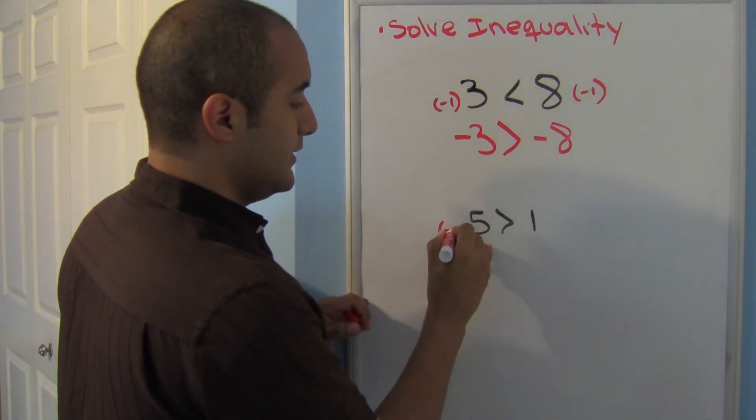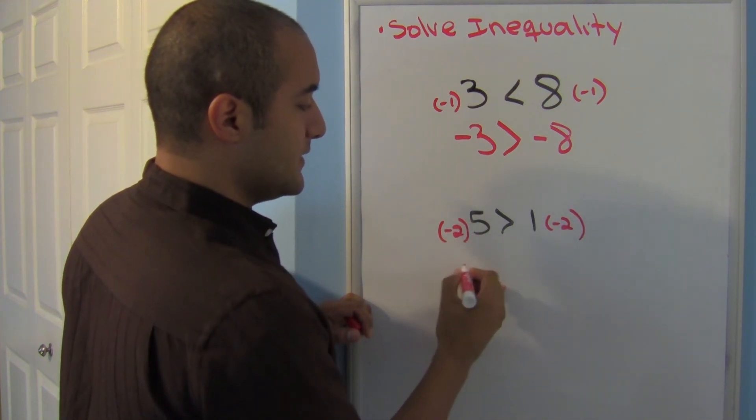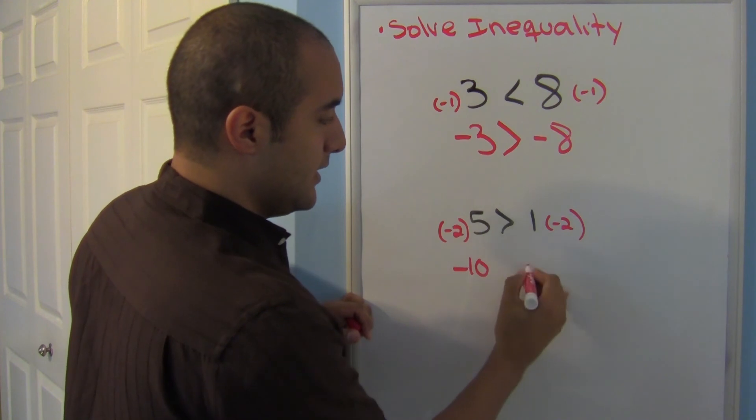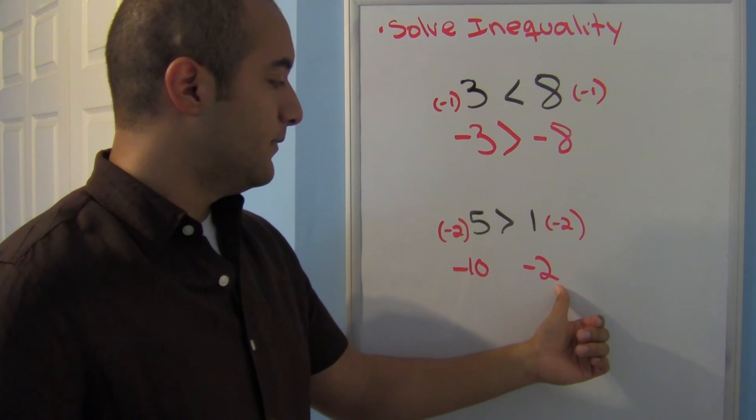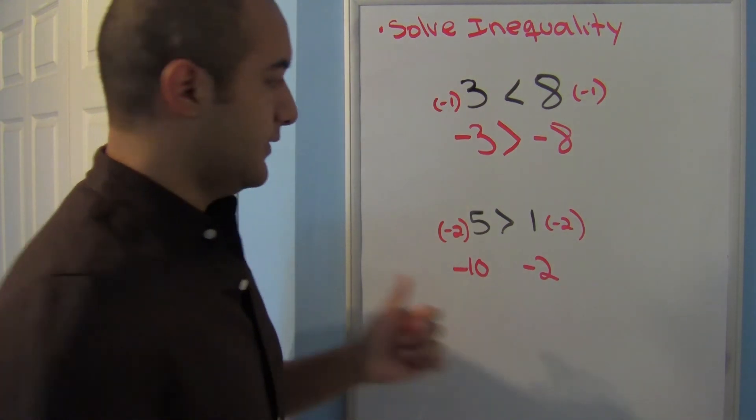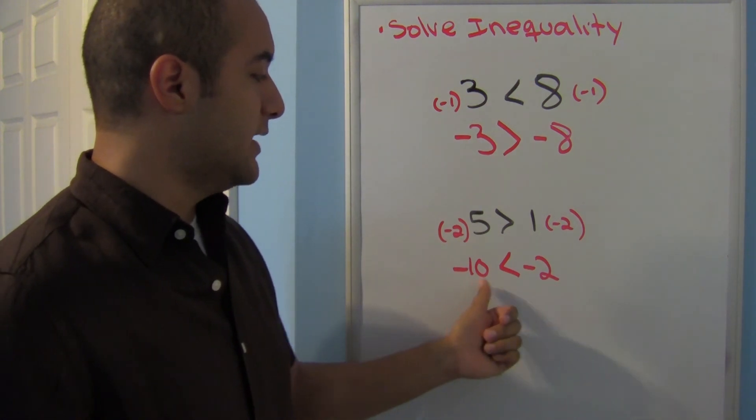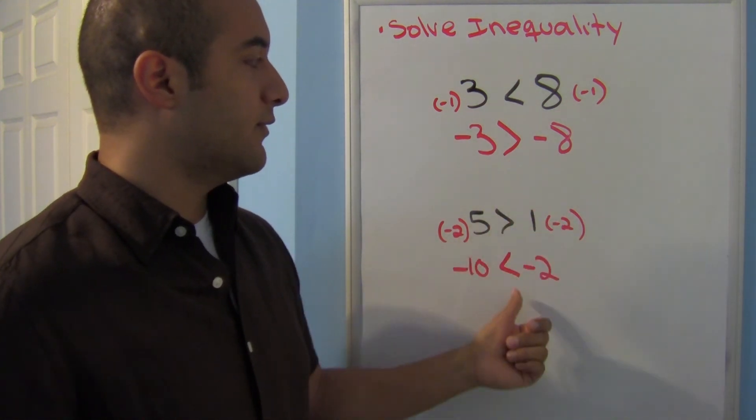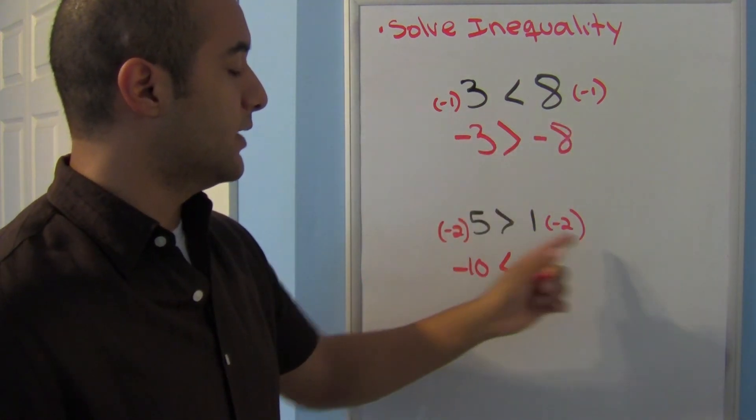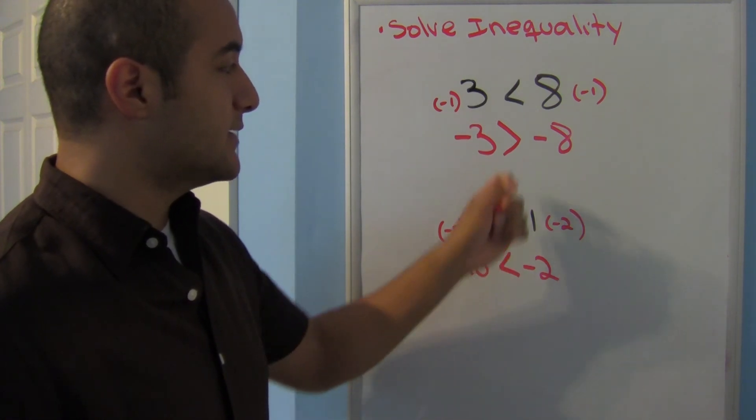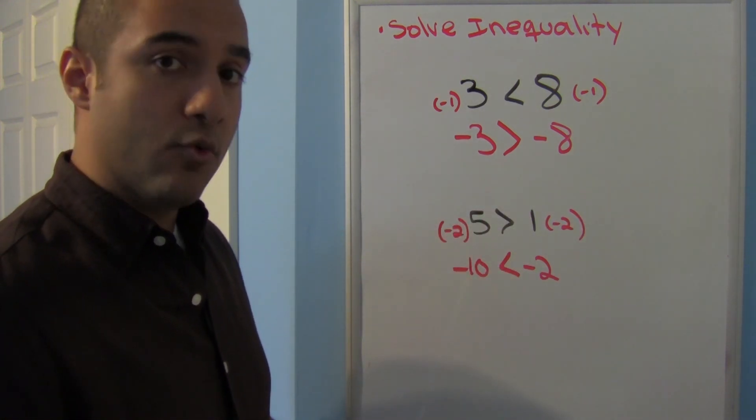Same thing here. If I multiply this by a negative 2, this says negative 10, negative 2. We know that negative 2 is greater than negative 8. So this should say negative 10 is less than negative 2. So notice that whenever I multiply or divide by a negative number on both sides, my sign must be flipped to keep my inequality true.